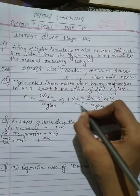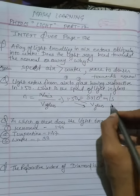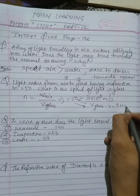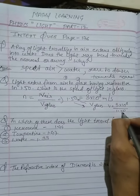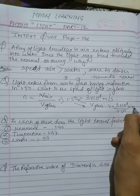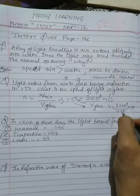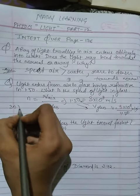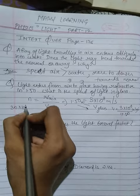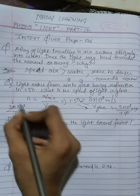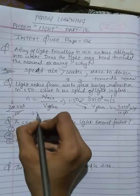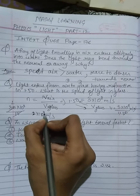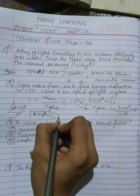Rearranging the formula, the speed of light in glass equals the speed in air divided by the refractive index. That gives us 3 × 10⁸ divided by 1.50, which equals 2 × 10⁸ meters per second. This is the answer.